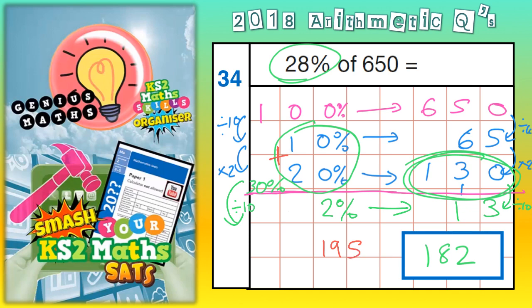And then subtract the 2%. So, 30% subtract 2 would be 28%. So, we'd actually have to subtract this 13. So, 195 take away 13.